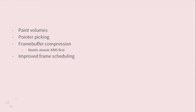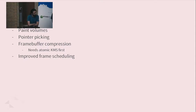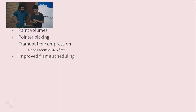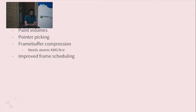Next things getting merged will probably be paint volumes. Pointer picking needs some more work but it's getting there. Frame buffer compression is kind of available — we've disabled it because we need Atomic KMS first to make it usable. And then there's improved presentation scheduling, which is work from Canonical — smarter timings for the Clutter clock, making things smoother. It's perceived performance rather than a raw performance thing.